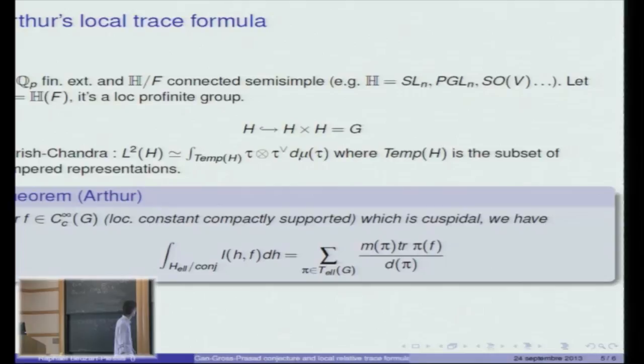The decomposition of the L2 space of H is given by a theorem of Harish-Chandra. It says that, as before, you have decompositions where only representations of the form tau tensor tau-check appears, but this time you don't have a direct sum but instead some sort of direct integral. Also an important point is that not all the unitary dual is appearing here but only a part of it which is called the set of tempered representations, and I denote it by temp of H. Then starting from here, Arthur was able to achieve his program and get some sort of local trace formula for this embedding.